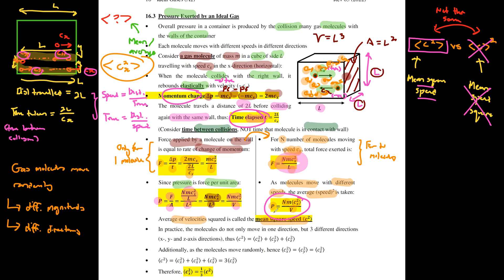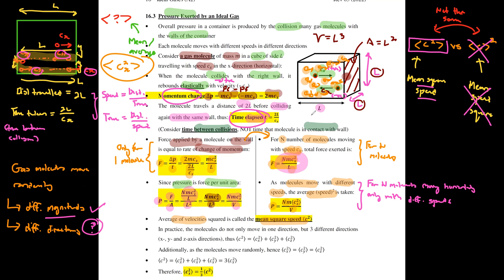At this point your equation is P = Nm⟨Cx²⟩/V. This is for N molecules moving horizontally only with different speeds — you've accounted for different magnitudes but not yet different directions. Gas molecules don't move only in one direction; they move in three directions: x, y, and z.